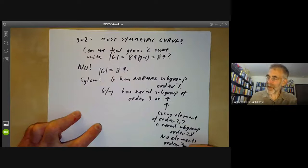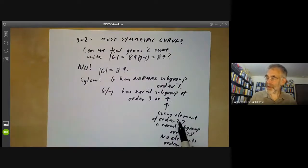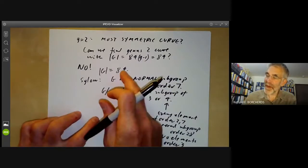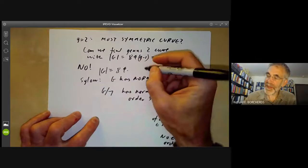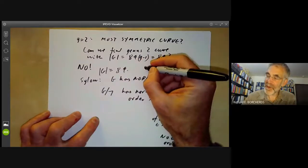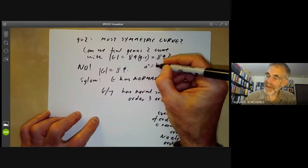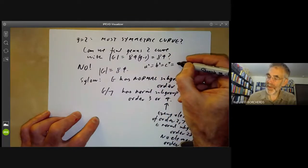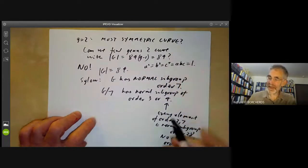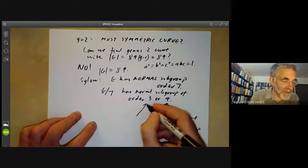So there are no elements of order two and seven whose product is order three. Remember last time we said that any Hurwitz group actually has to have three elements a, b, and c with a squared equals b cubed equals c to the seven equals abc equals one. So in this case that's not possible.